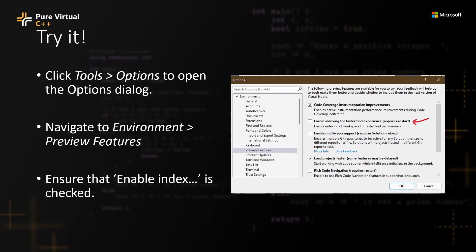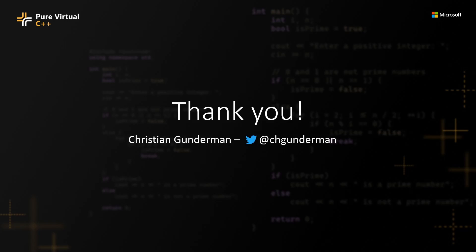If you want to try it, all you have to do is update Visual Studio to the latest public release, click Tools > Options to open the Options dialog, navigate to Environment > Preview Features, and ensure that Enable Indexing is checked. Thank you for watching — I hope that you enjoyed watching as much as I enjoyed helping build this.